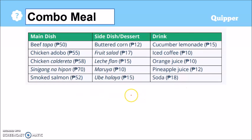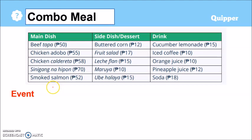Let's say you are tasked to list all the possible combo meals that you can form using this menu. You have to choose one for the main dish, one from the side dishes, and one from the drinks. Let's recall that an event is a result of an experiment. So one event would be choosing beef tapa from the main dish, another event would be choosing buttered corn for the side dish, another event would be choosing orange juice for a drink. The combinations of all these three events is called the compound event.